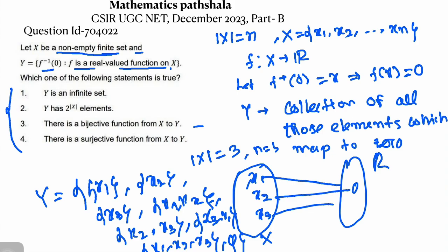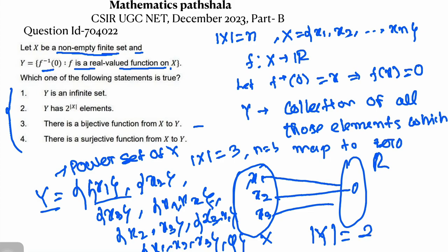So we can see that Y is actually the power set of X. Y is the power set of X. The cardinality of Y is 2 to the power of |X|. So for n = 4 and other cases we can prove this similarly. Therefore, option 2 is true: Y has 2^|X| elements.